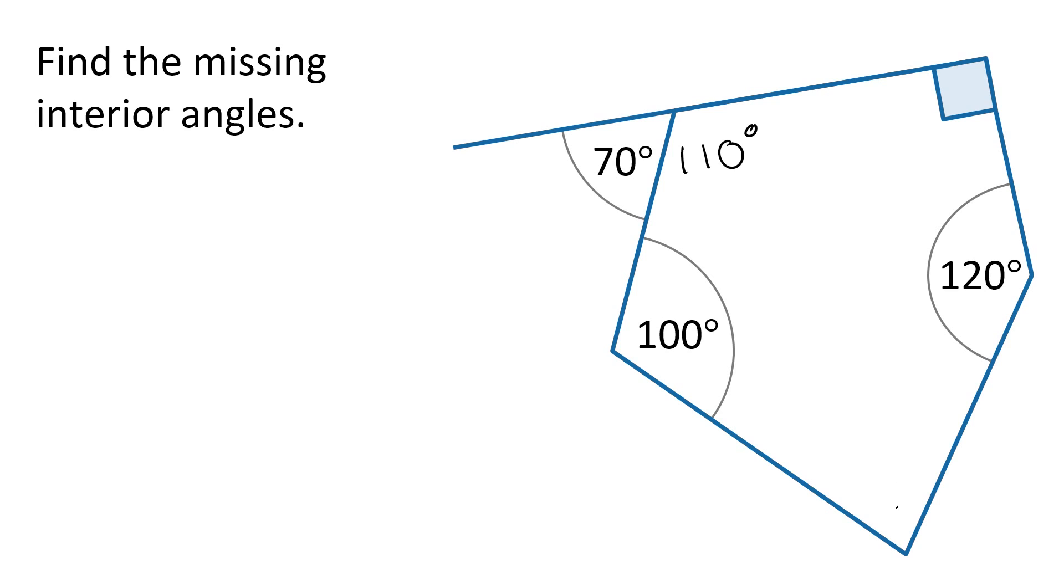First of all, we need to know the total interior angle sum of this shape. It is a five-sided shape, a pentagon, and so either we can just know that the total interior angle is 540 degrees, or if we didn't have that information to hand, we can get it by using the formula.